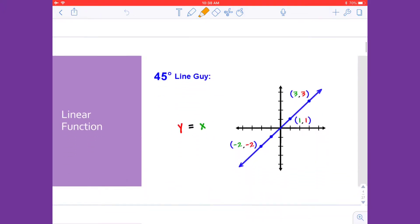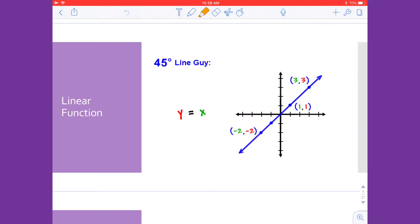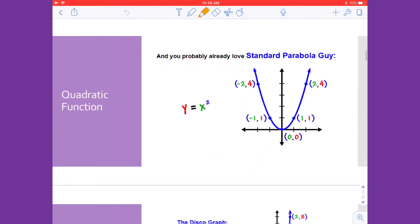So talking about our first parent function, we have the linear function. The linear function creates a line, so that is the shape. It does pass through the origin. It is the equation y equals x.